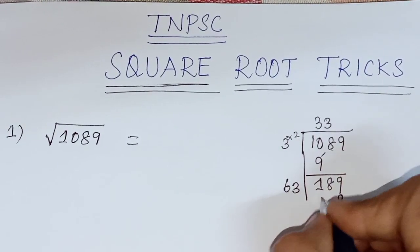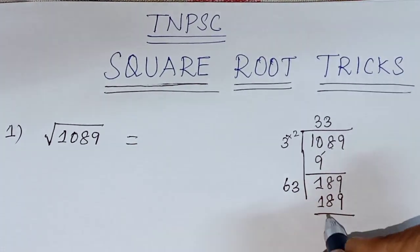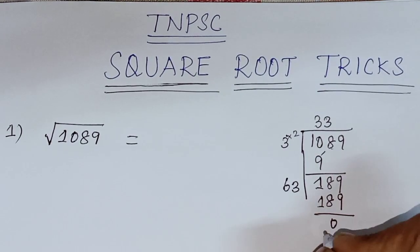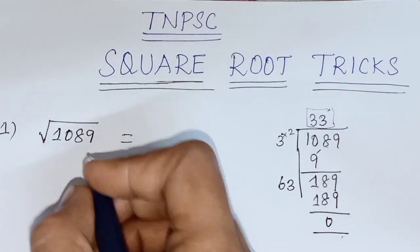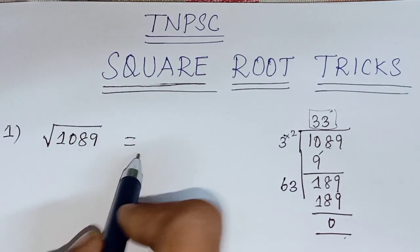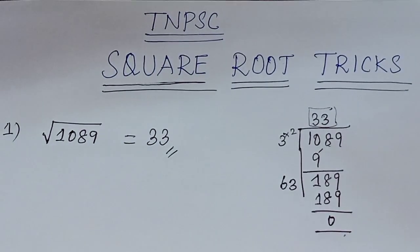6, 3 sir, 18. Remaining 189 minus 189, 0. Reminder is 0. Question is 33. So square root of 1089, square root is 33. So this is the answer.